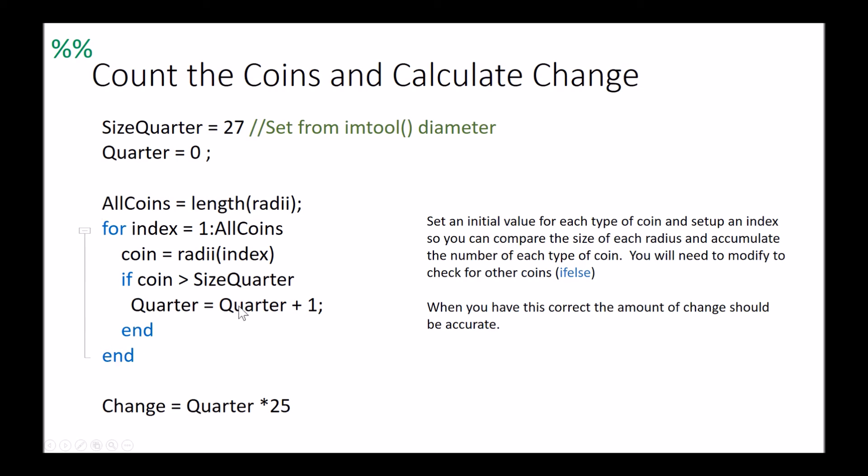We can get it to where this quarter adds up to our money. We multiply by 25 and we get the change. So what you need to do is you need to take this and modify potentially with an if-else and do it for your dimes, do it for your nickels, and do it for your pennies so it will actually calculate up all your change.